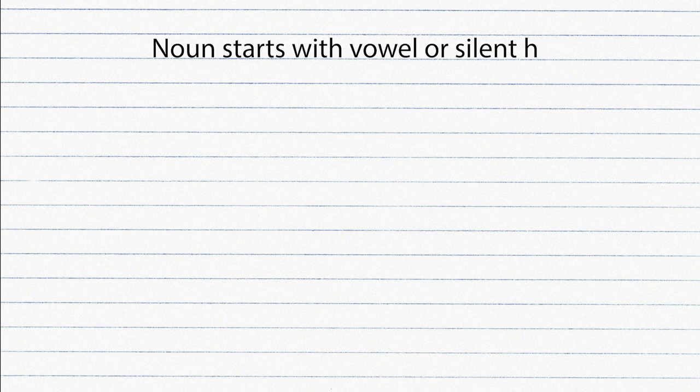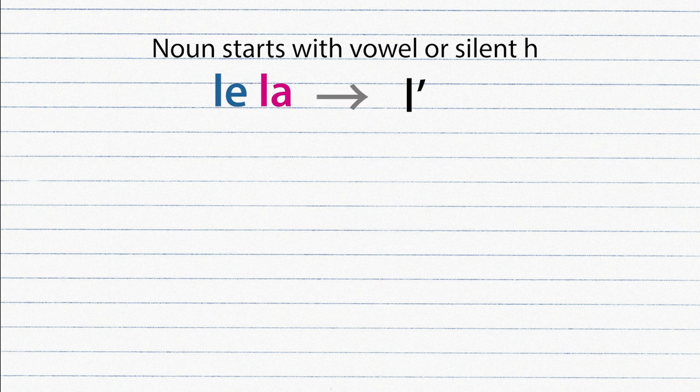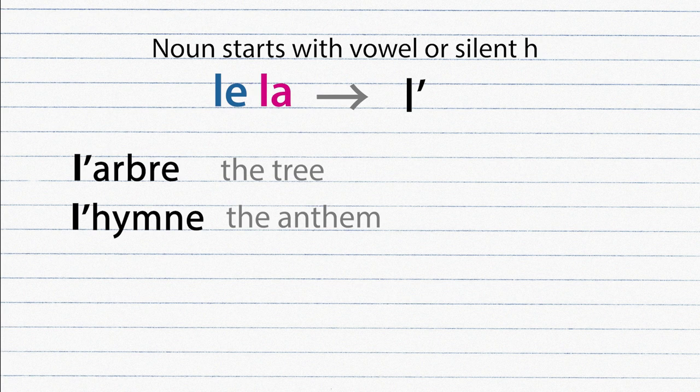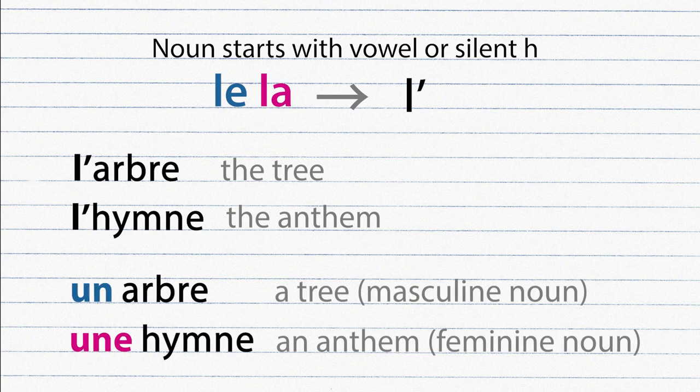If a noun starts with a vowel or silent H, the definite article le or la becomes l'. L'arbre, l'hymne. And in order to learn the gender of these words we need to learn the word with its indefinite article. Example: un arbre, une hymne.